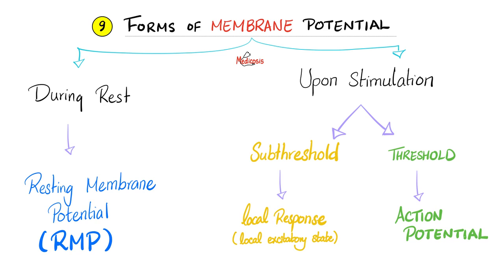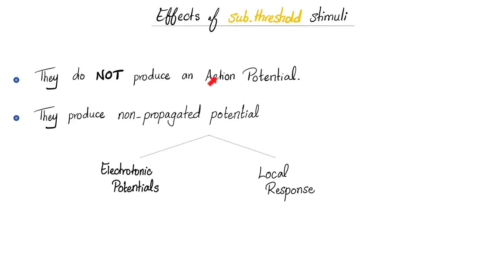All of that was about action potential with a threshold stimulus. But what if the stimulus is subthreshold? You get a local response. This is not an action potential — it cannot make you see, hear, smell, or think. Local response is minuscule; it cannot propagate from the beginning to the end of the axon. A subthreshold stimulus produces a non-propagated potential, divided into electrotonic potentials and the local response.